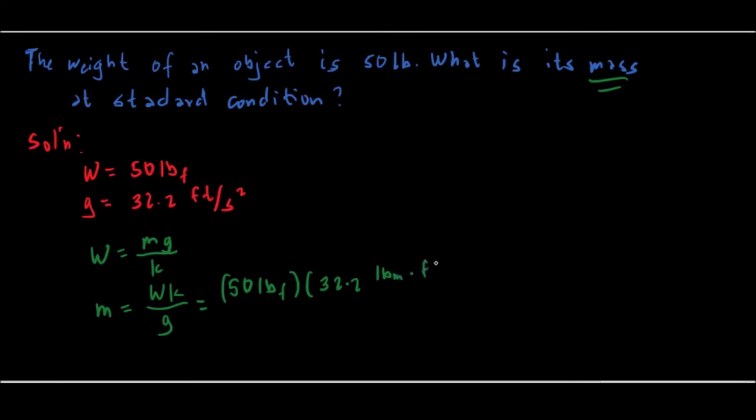That is the constant of proportionality for the fps system. So if you want to know that one and how this one is derived, you can watch the previous videos.